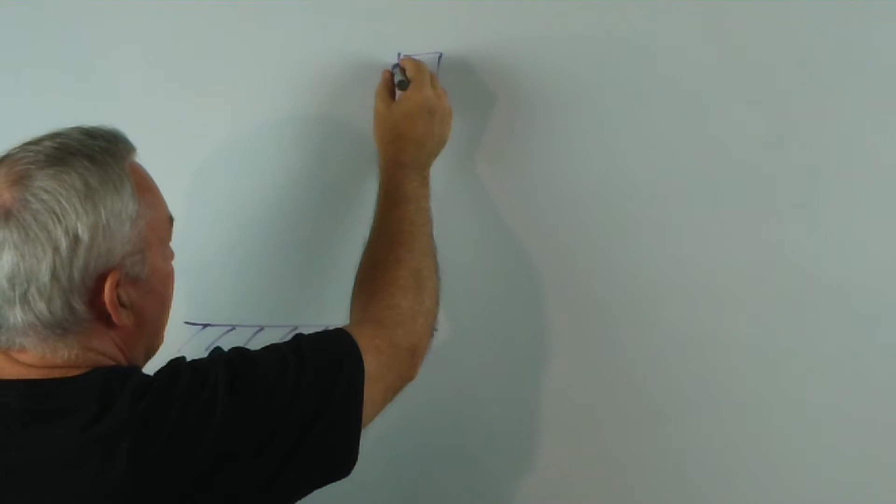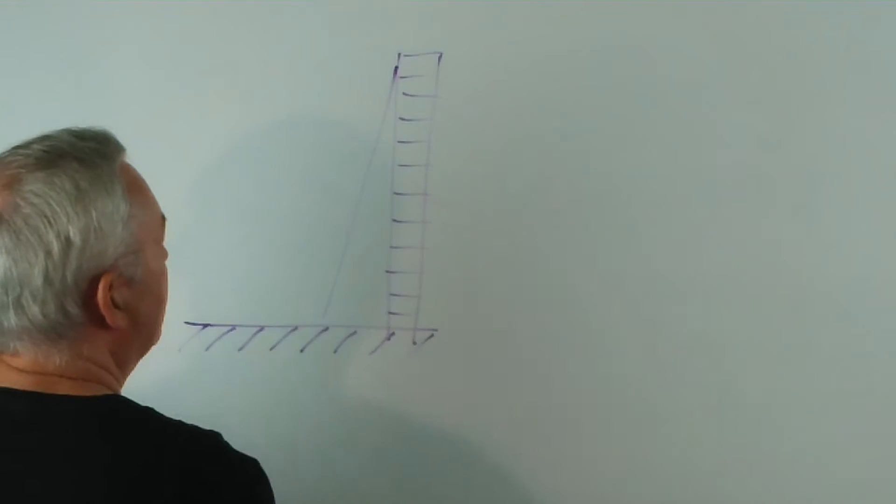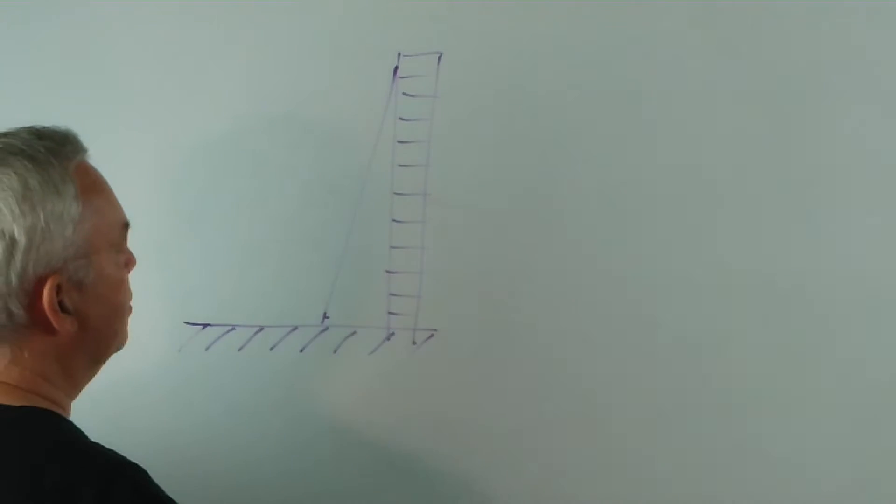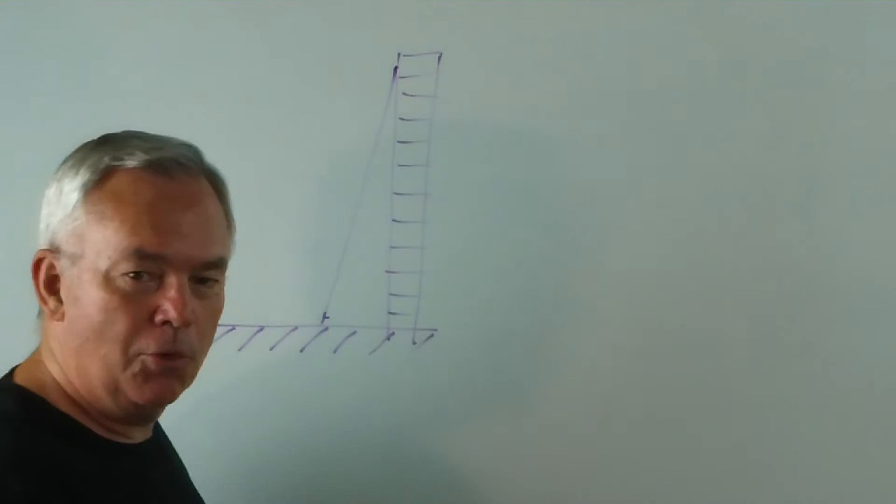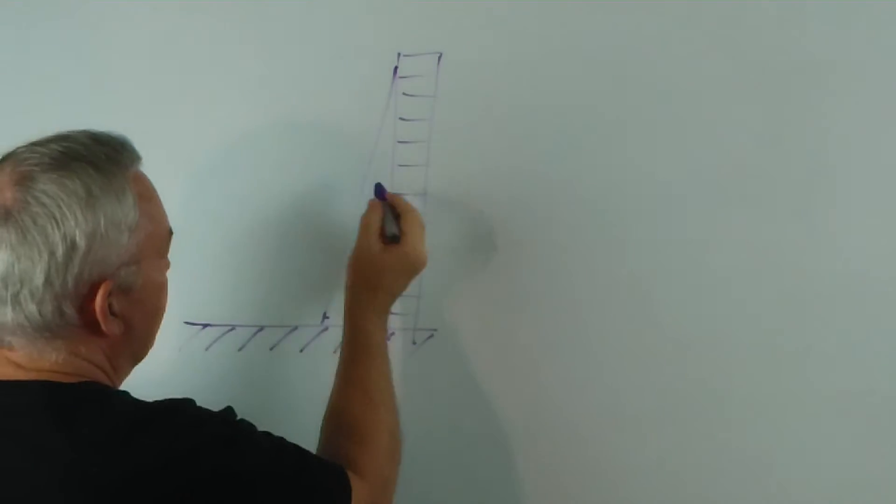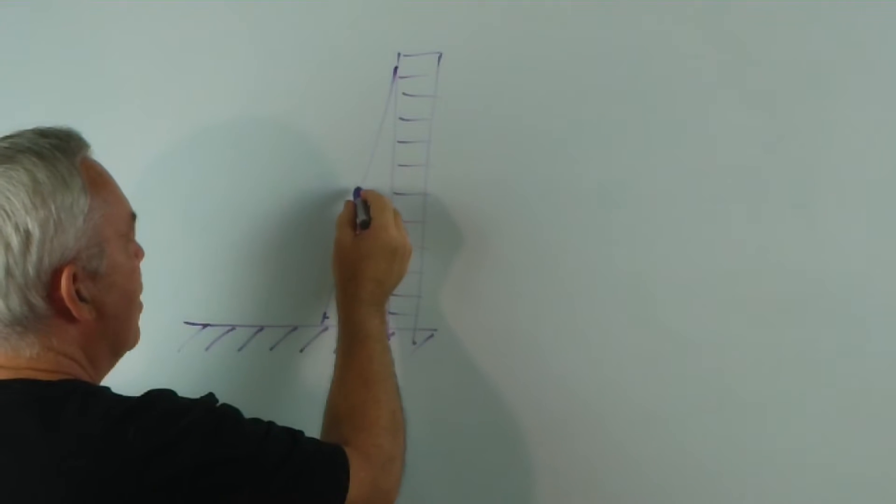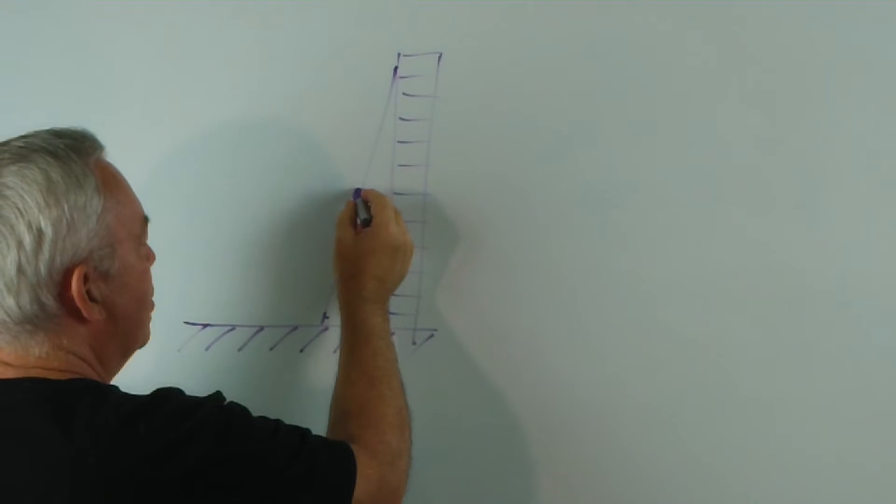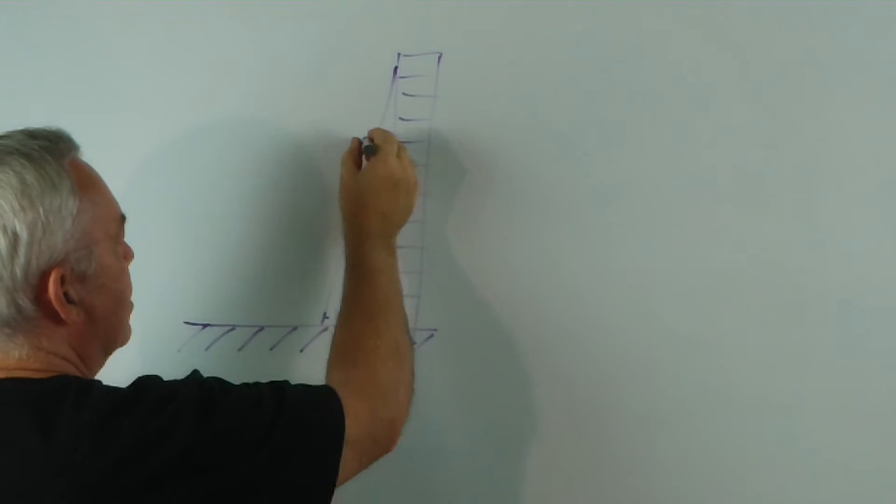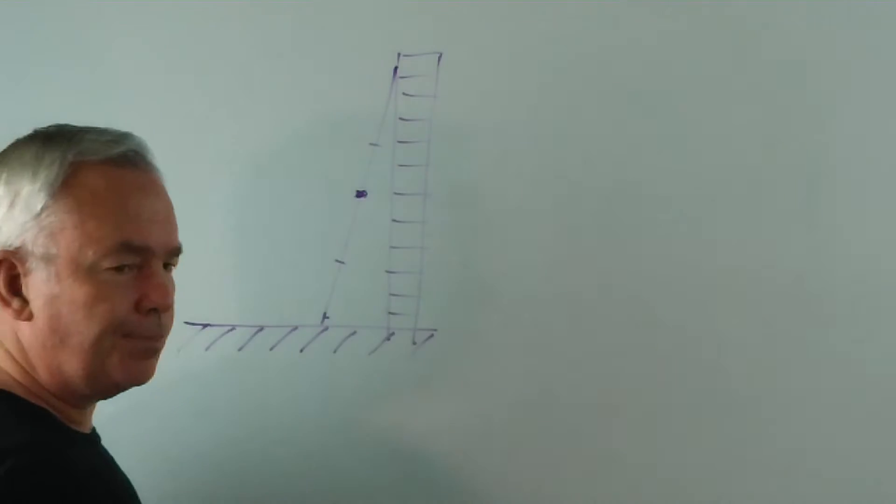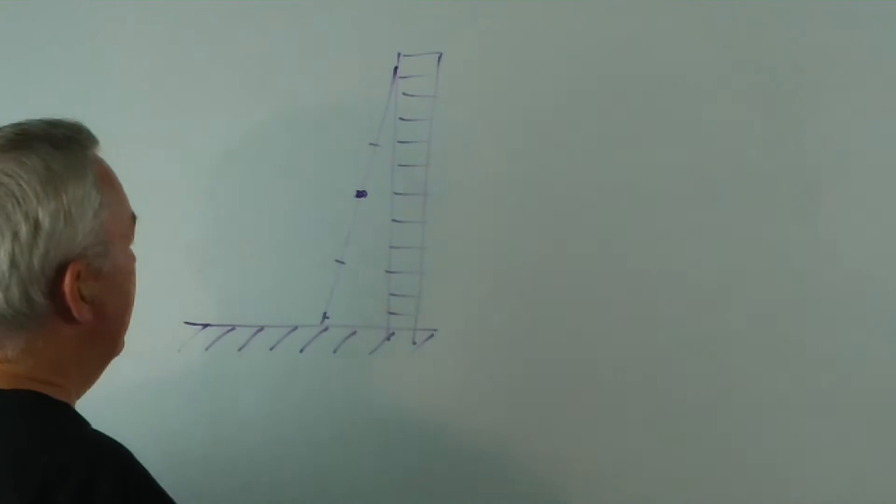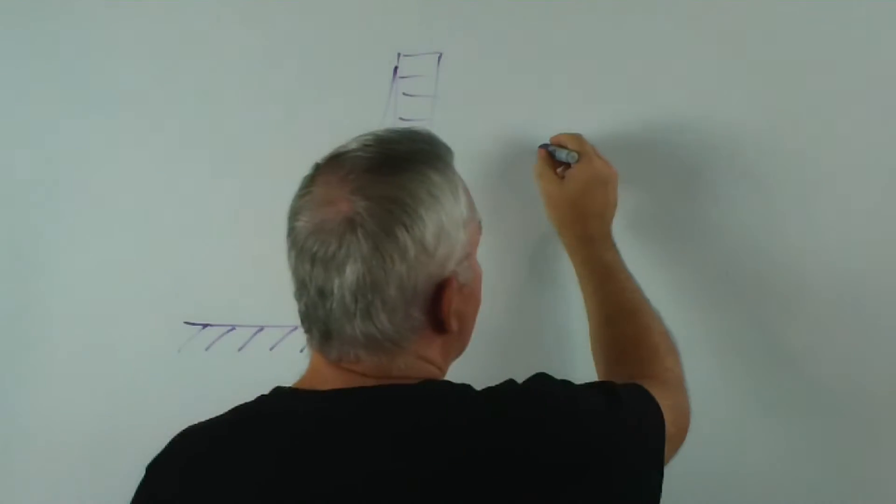Now imagine that we have a ladder leaning up against the wall. I've deliberately drawn it in quite steep for reasons that will become obvious. And imagine, or at least locate, the point exactly halfway up the ladder. So this length equals that length.